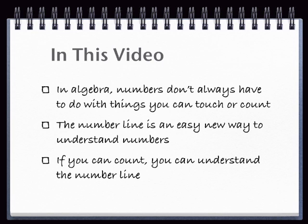If you're starting to learn pre-algebra, you've probably been thinking about numbers in terms of amounts of things - three apples, twelve kids, half a pizza, that kind of thing. In algebra, you'll be working with situations where numbers don't necessarily have to do with things like these that you can touch or count, so you'll need to learn to think about numbers a little differently. The number line is one real simple tool you can use to start thinking about numbers in this new way.